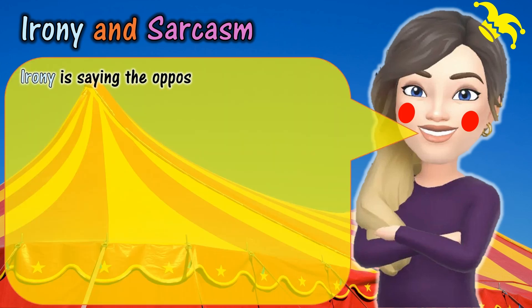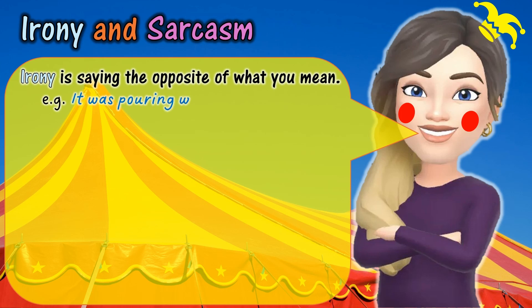Irony is saying the opposite of what you mean in order to make someone laugh or make light of a situation. For example: 'It was pouring with rain. Perfect weather for a barbecue.' Rain might ruin your barbecue, but here the author is trying to make light of the fact that it rained when they had planned to have a barbecue.